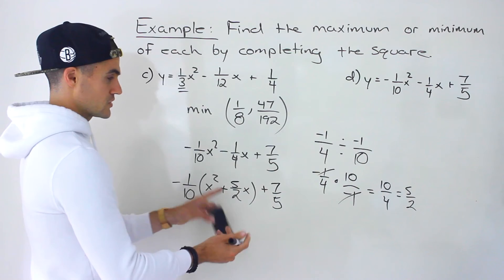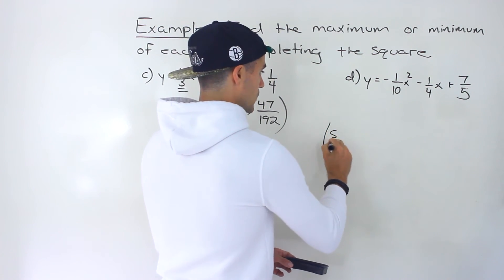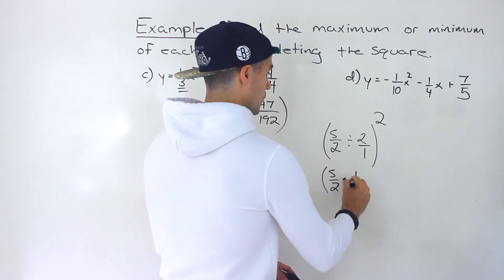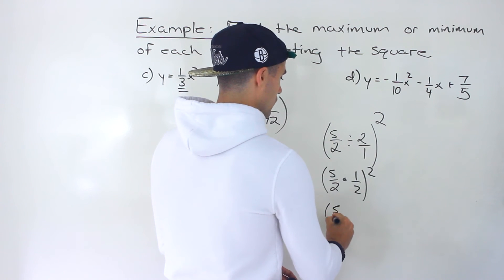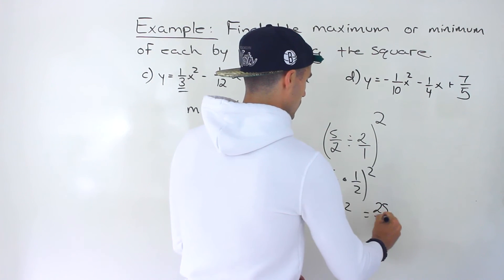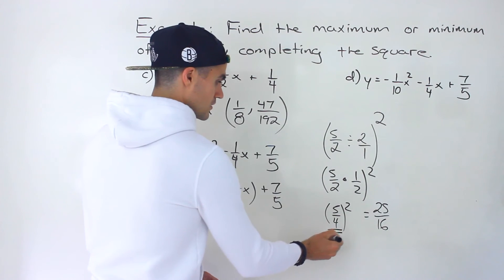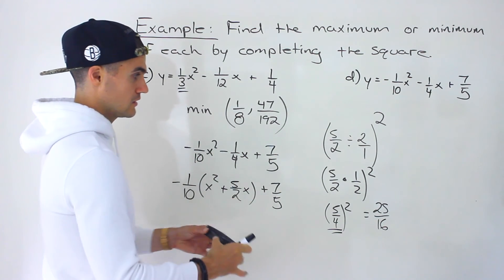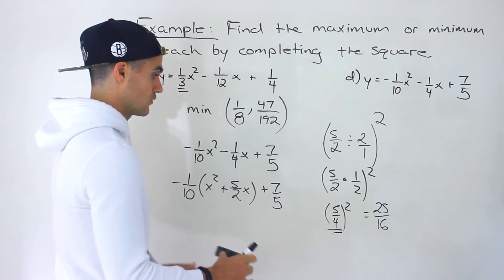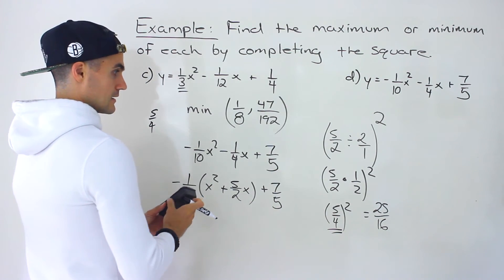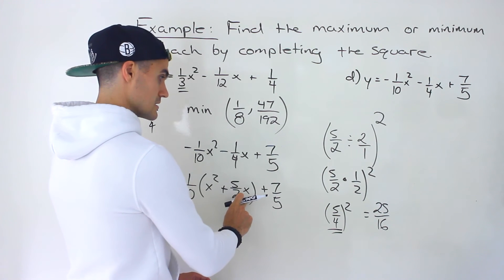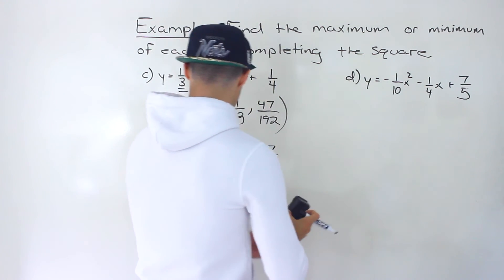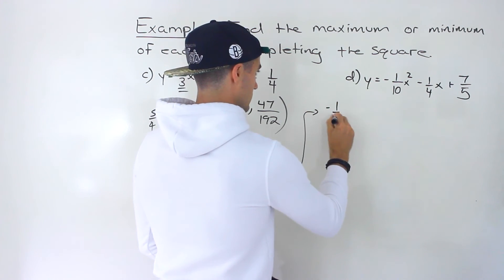Next step: take five-over-two, divide by 2 — that's multiplying by one-half — giving five-over-four. Then square it: five squared over four squared is 25-over-16. Remember this five-over-four because it will appear in the perfect square trinomial factor as half of the b coefficient.